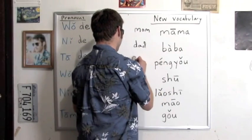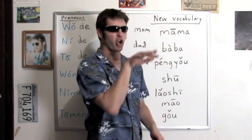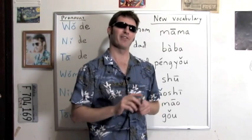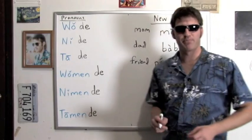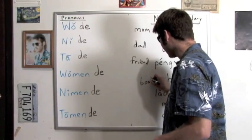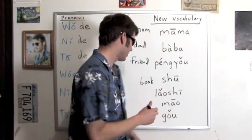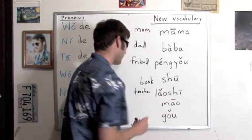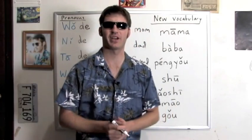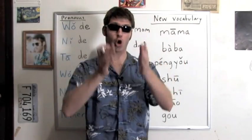And then here's a new one — it means friend: péngyou. Second tone: péng, then yǒu. Péngyou. Next one — book: shū. Shū — it's a book. I think we know the next one, so I'm going to let you take it. That's right — lǎoshī, teacher. And then māo — cat. And, no use having a cat without a dog, right? So we have gǒu — open your mouth a little — gǒu — dog.